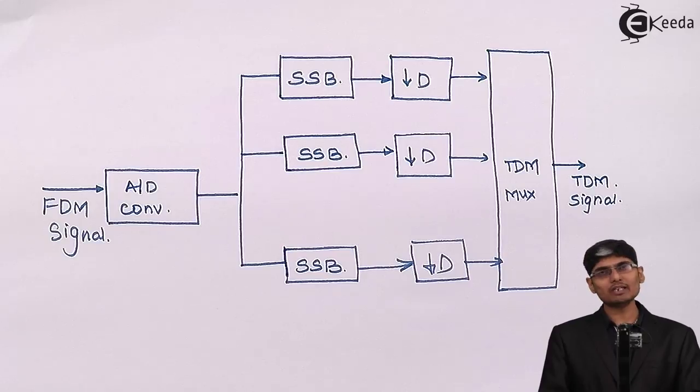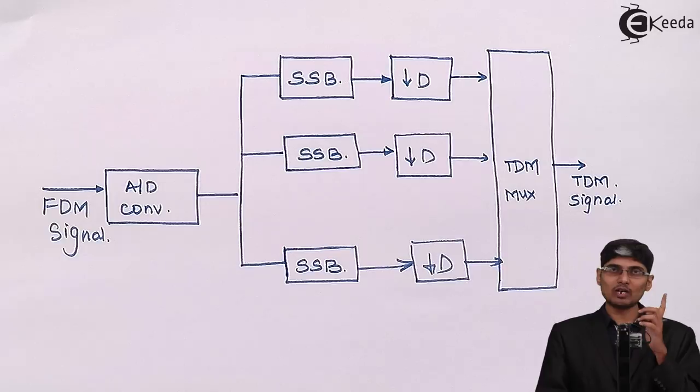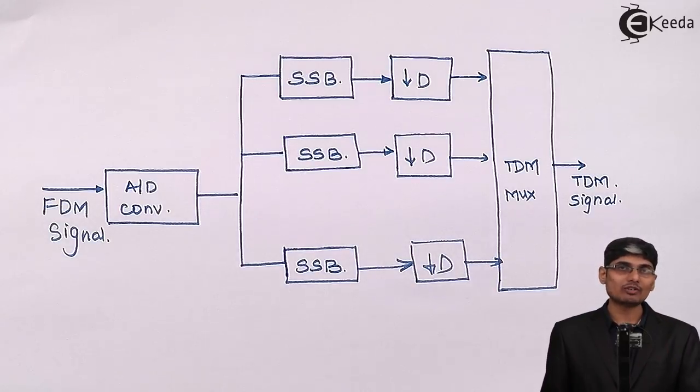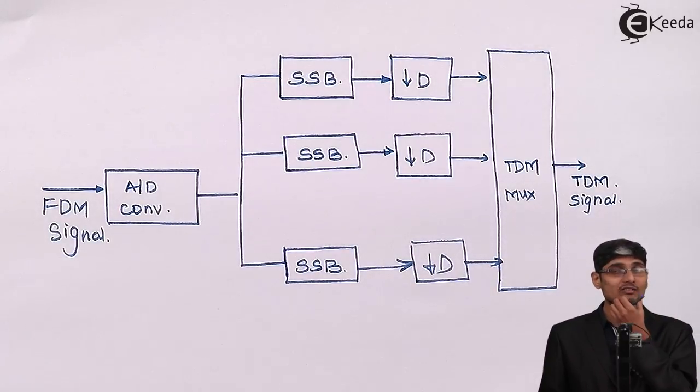Telephony signals basically are of 4 kilohertz and use SSB modulation technique. We normally take 4 kilohertz one voice signal, combine such 12 signals together and make a basic group. So we have 12 signals in one voice group.